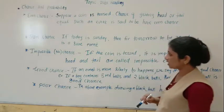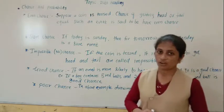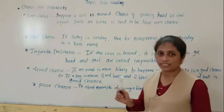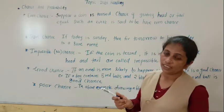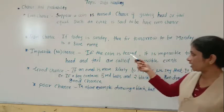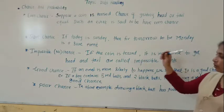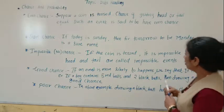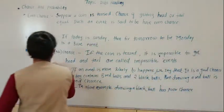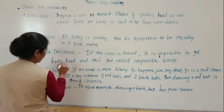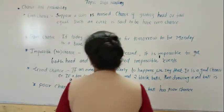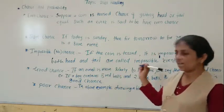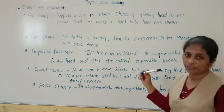Next, impossible means no chance. If you toss a coin, you will get either head or tail — you cannot get both head and tail at the same time. So if the coin is tossed, it is impossible to get both head and tail. Getting both head and tail is called an impossible event.